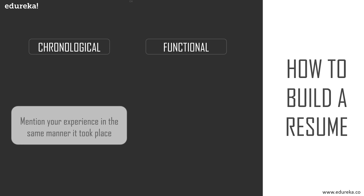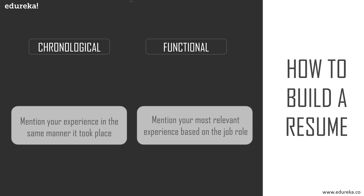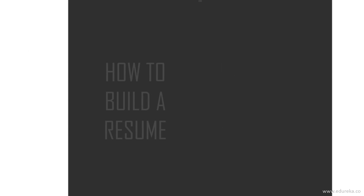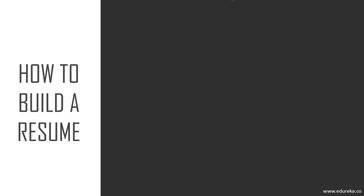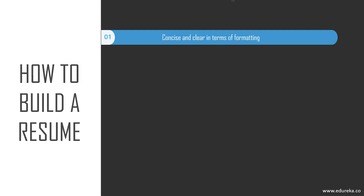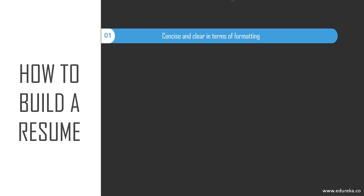The functional method is a newer approach where you mention your most relevant experience based on the required skills. Here, the recruiter does not have to go through the entire resume to find the required skills — it is a more focused and concise way of portraying yourself. A few key points for building your resume effectively: it should be consistent, concise, and clear in terms of formatting, and the message you convey should be direct.